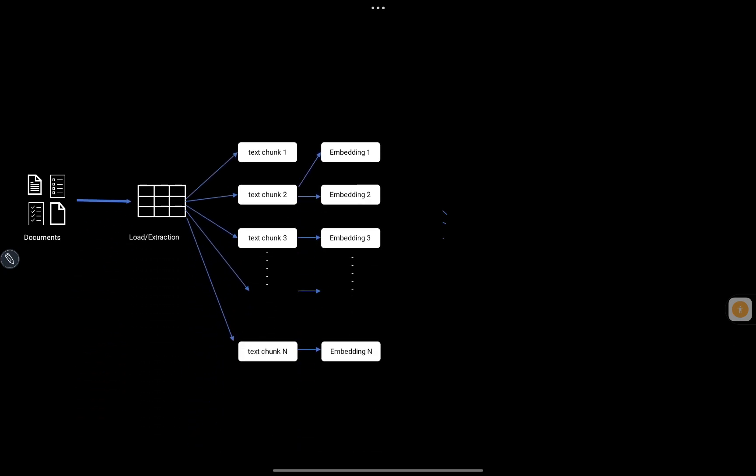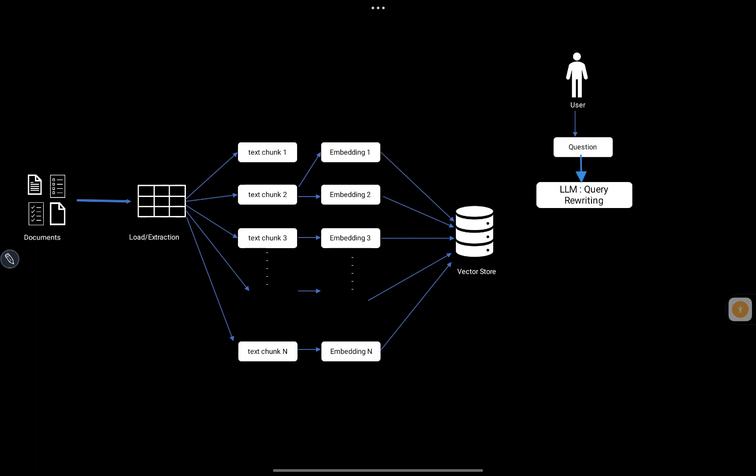The document gets loaded, we create chunks, then create embeddings which get stored in the vector store. Once the user comes with a question, we keep that question but also pass it to an LLM to augment different variations of the question based on the user's original intent. Once multiple questions are generated, we create embeddings for each of those questions, and along with the original question, pass them to the vector store for a semantic search.